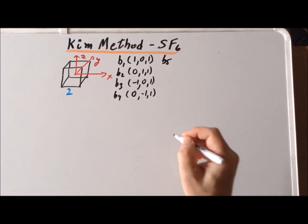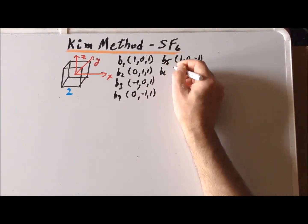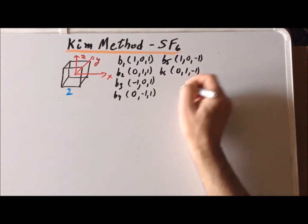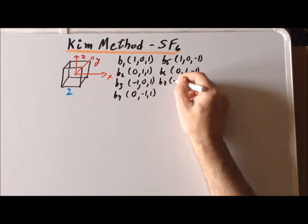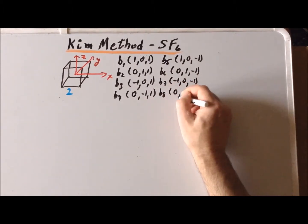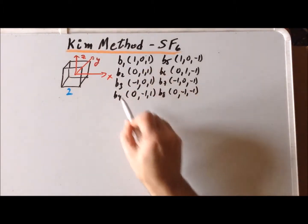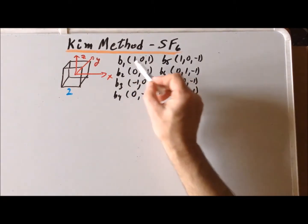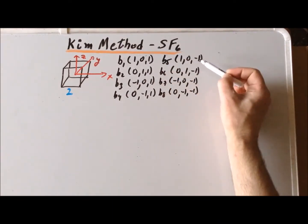Along the bottom, it works the same sort of way. B5 is (1, 0, −1), B6 is (0, 1, −1), B7 is (−1, 0, −1), and B8 is (0, −1, −1). Notice that B5 through B8 simply took the same x and y coordinates and transformed the z coordinate from +1 to −1.